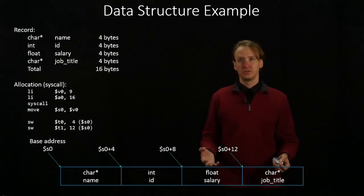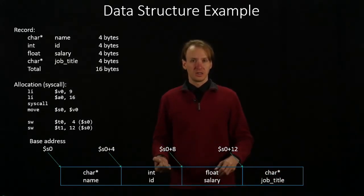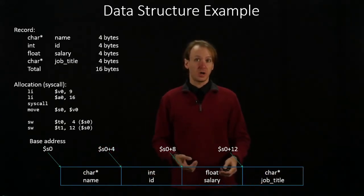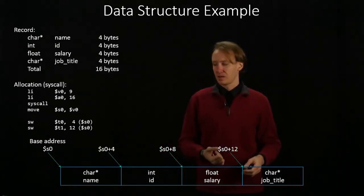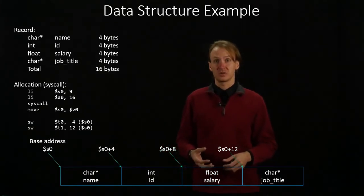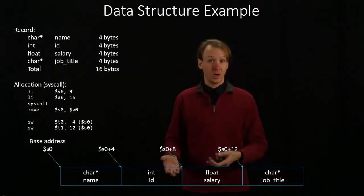If I'm allocating this using a system call, then I'm using system call number 9. In this case, my data structure needs 16 bytes of space, so I put 16 into A0, and then I make the system call. And because I like putting my base address in S0, I'm going to copy the address that the operating system gives me from register V0 to S0.